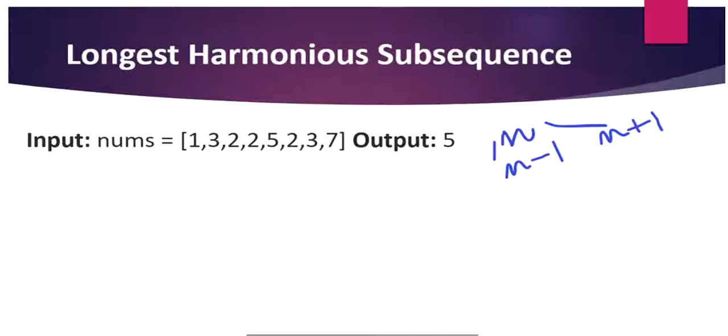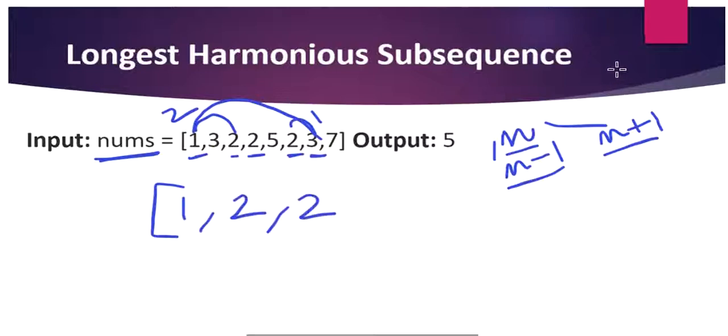So in this case we should have an array with numbers n, n minus 1, and n plus 1. Consider our example nums here. Let's start writing the numbers. If you consider 1, it has 2 where the difference between 2 and 1 is 1, and again it has one more 2 and one more 2. We can't include 3 because the difference between 3 and 1 will be 2. In that case we can have an array of 1, 2, 2, and 2.